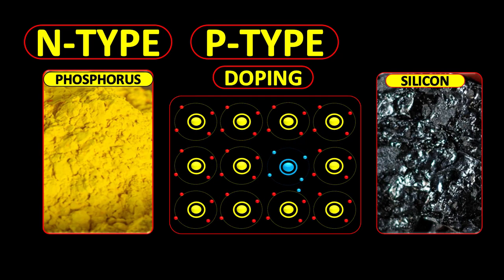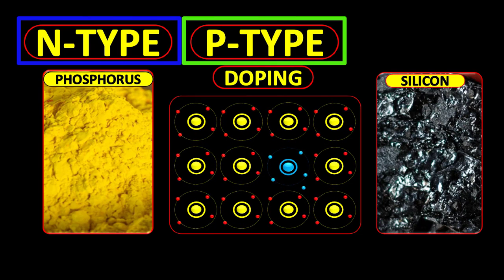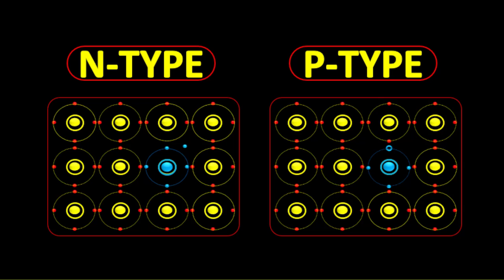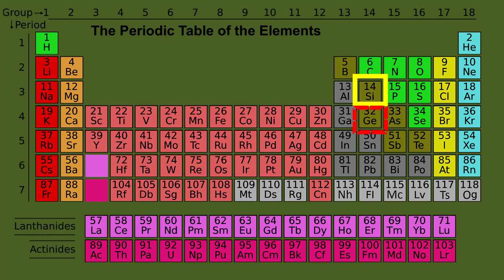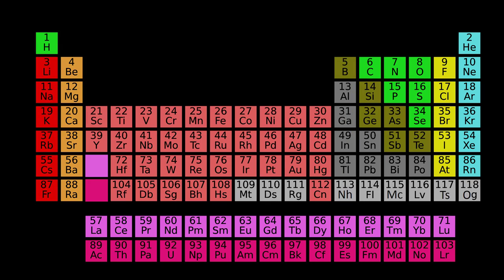Hi guys, in this video we are going to see n-type and p-type semiconductors. N-type and p-type materials are made up of semiconductors. Silicon and germanium of group 4 in the periodic table are semiconductors.